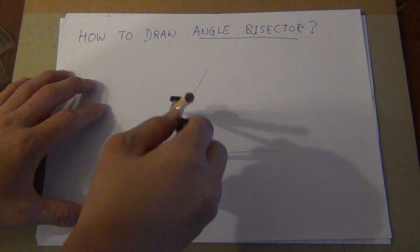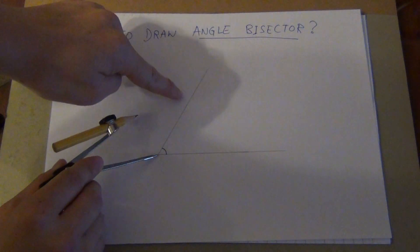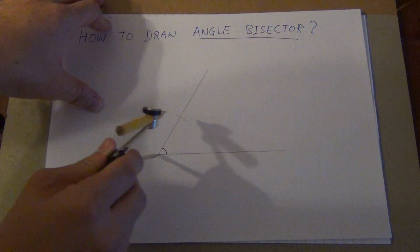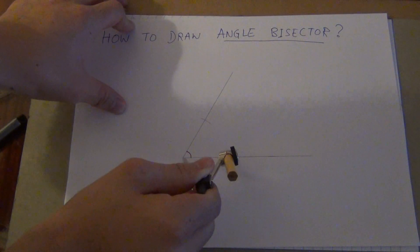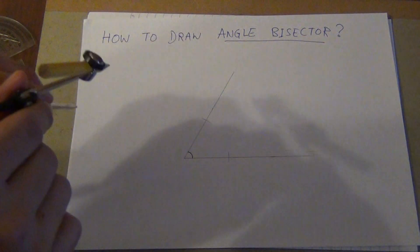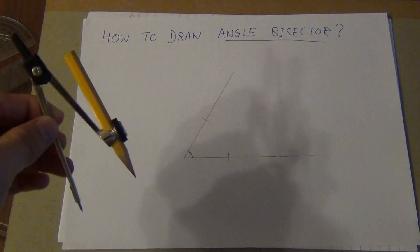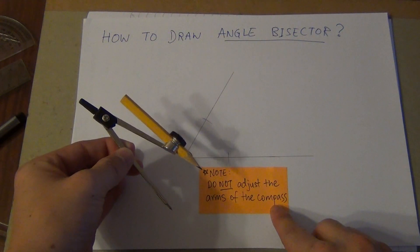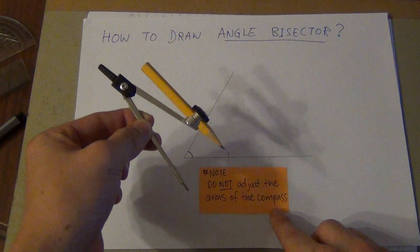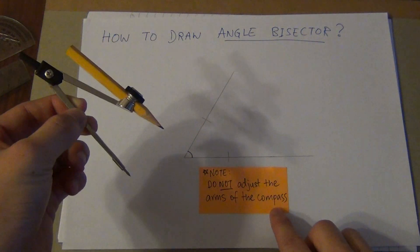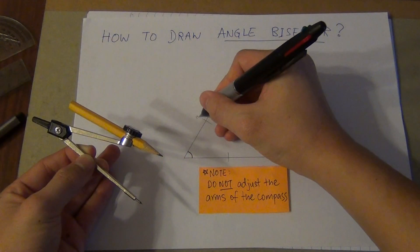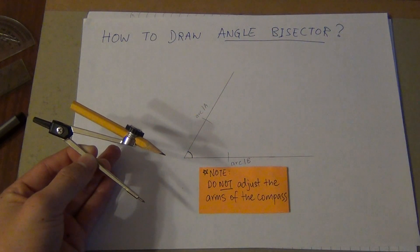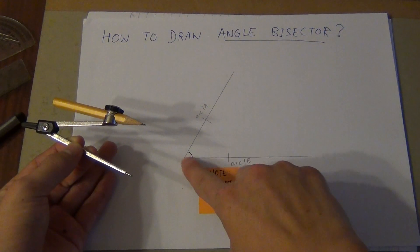What I want you to do is hold on to the hinge. There are two lines over here, line one and line two. You're going to do a small arc on line one and a small arc onto line two. Make sure when you are doing this you do not adjust the arms of the compass. Always keep it as it is, leave it.